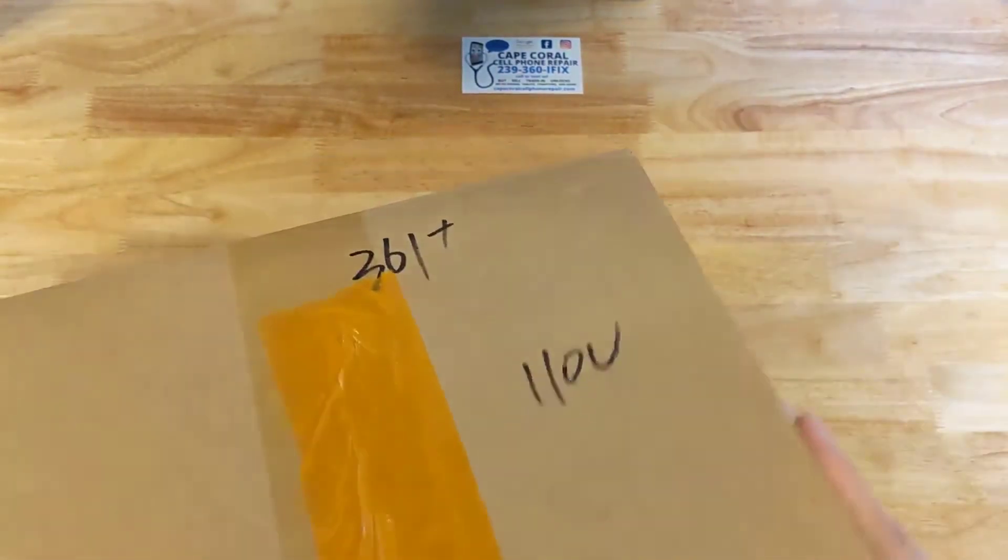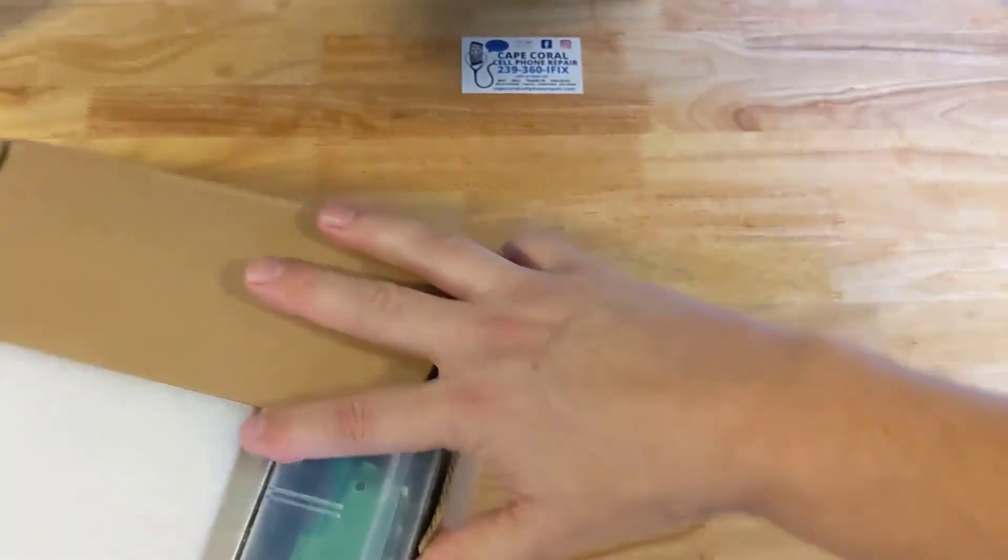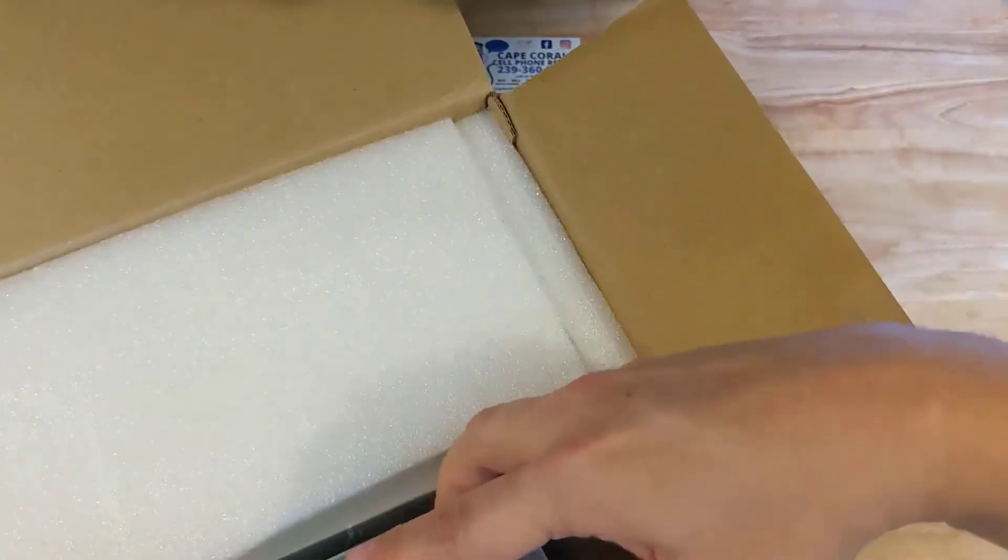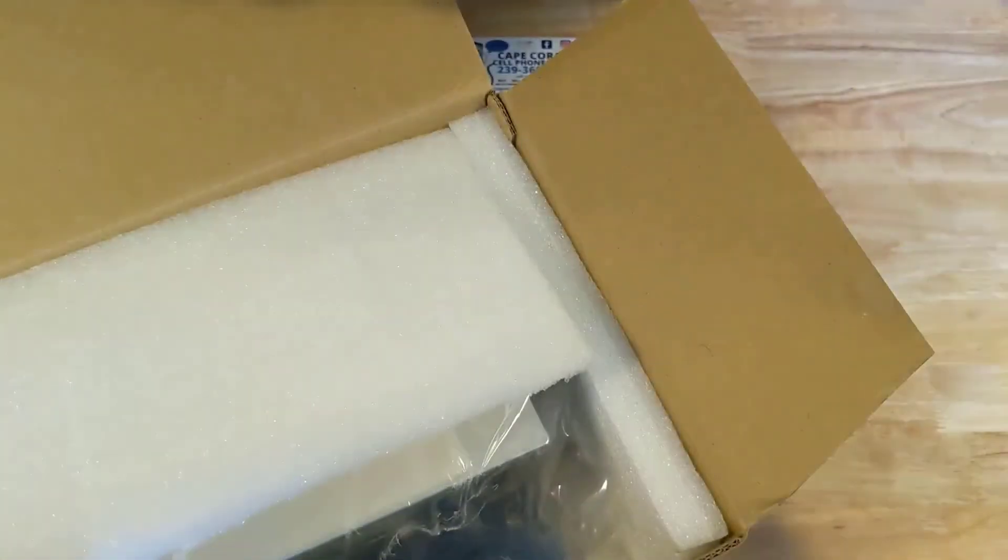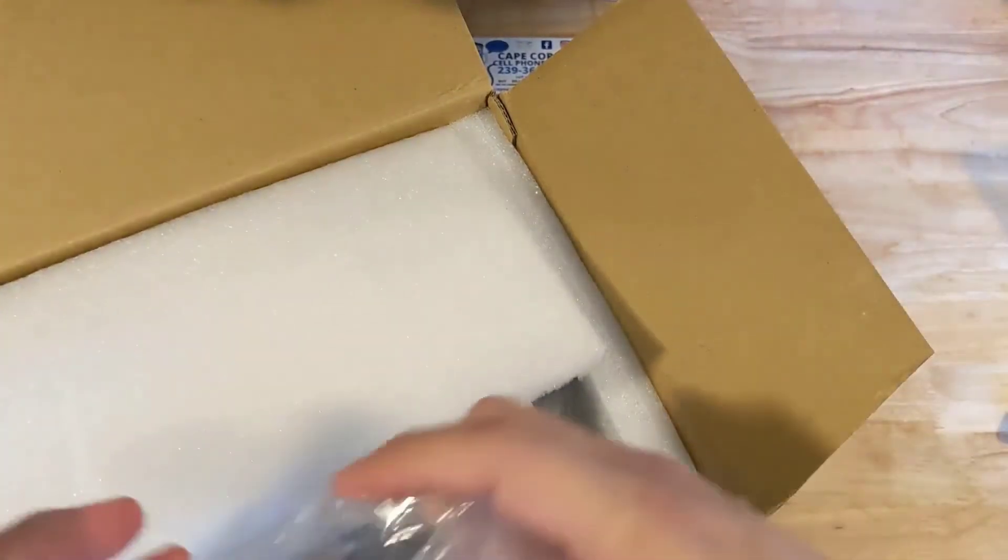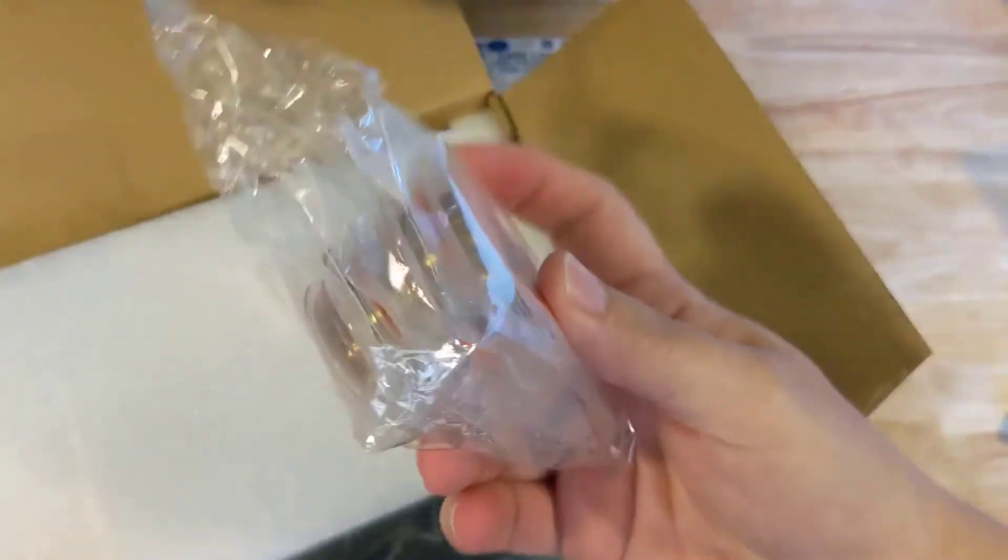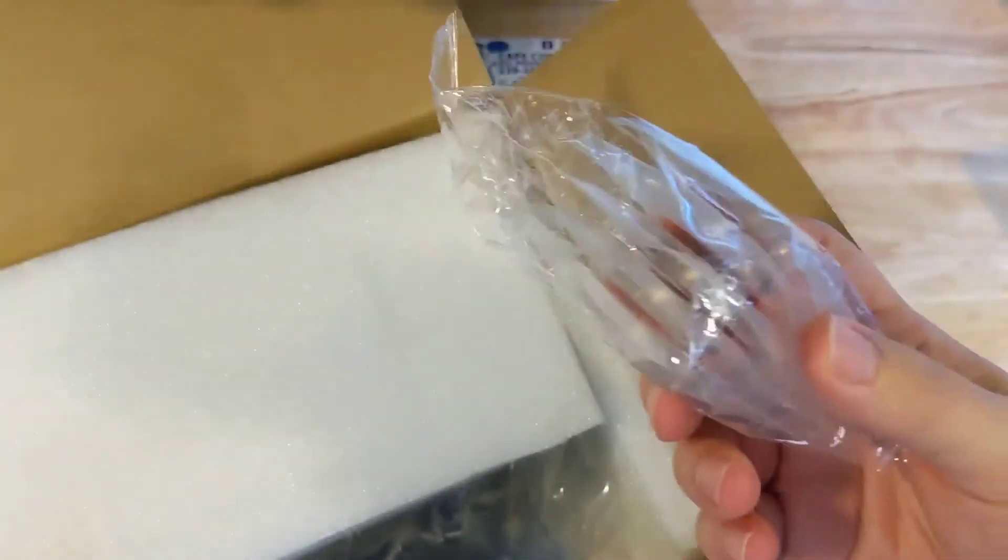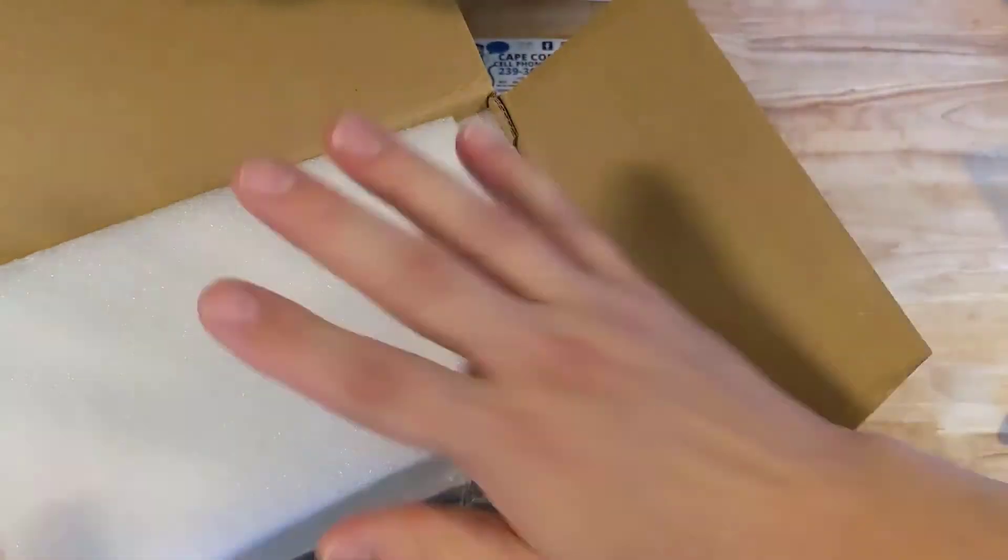And there you go, 361 plus. So they labeled it correctly. We also ordered a few other supplies which we received from them, including some wire. This is a separating wire. We got five of them in there. But here's the machine.